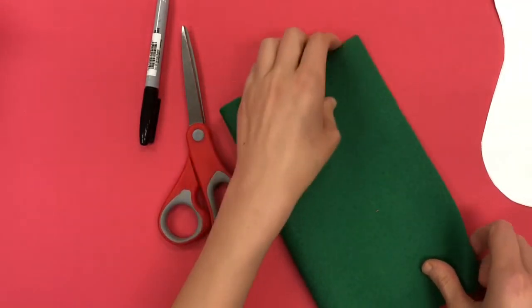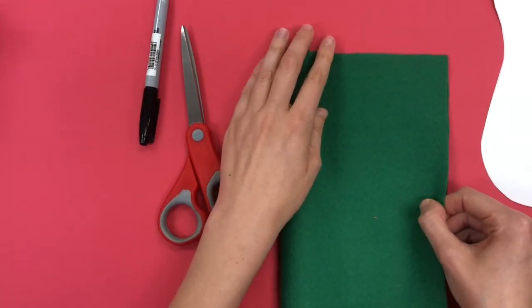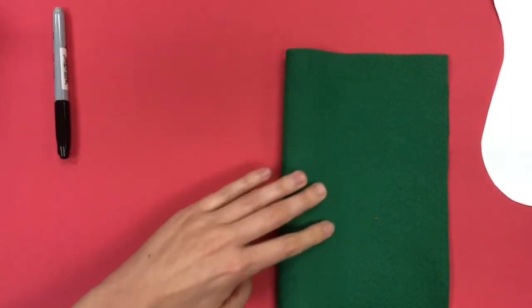The first step is I'm going to take my 9 by 12 piece of felt and fold it in half and very carefully cut right down the middle.